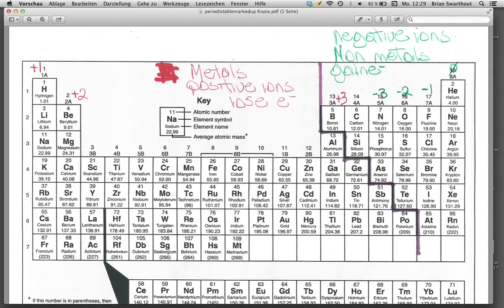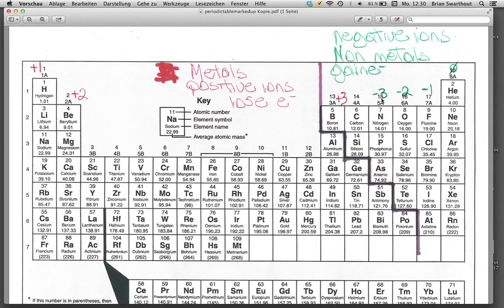Speaking of the periodic table, this is what your periodic table should look like. You need to have this information written on your periodic table, which we went over in part one. You should have the most common ionic charges: group one is plus one, group two elements is plus two, group thirteen metals — aluminum down — is plus three, group seventeen elements — fluorine — minus one, all of the group sixteens minus two, and group fifteens minus three. So you know the most common charge on those metals and nonmetals.